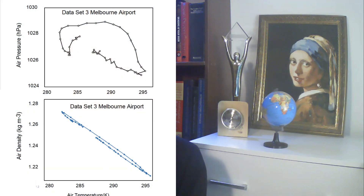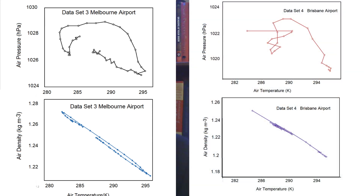This was measured at Melbourne airport and that was measured at Brisbane airport. As you can see, although the plot of air temperature versus air pressure looks irregular, the thermodynamical processes near the surface are mainly associated with the interplay of air temperature and air density.